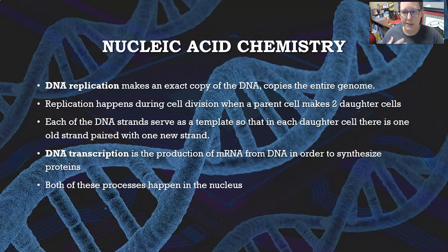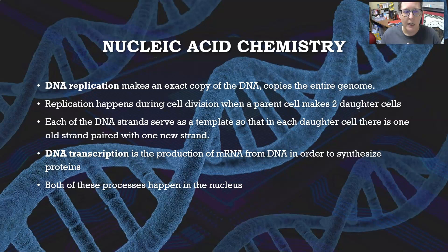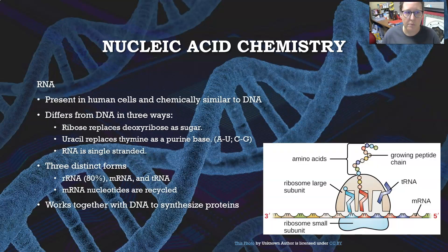DNA replication makes an exact copy of the DNA and copies the entire genome. Replication happens during cell division when a parent cell makes two brand new daughter cells. Each of the DNA strands serves as a template so that each daughter cell will have one old strand paired up with one brand new strand. DNA transcription is the production of messenger RNA from DNA in order to synthesize protein later — it's copying the recipe for that protein from the DNA into an RNA. Both of these processes happen inside of the nucleus.